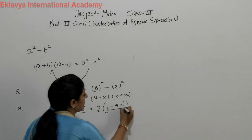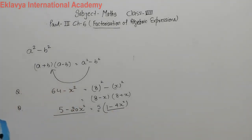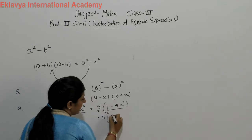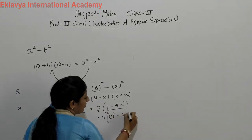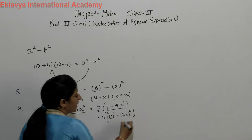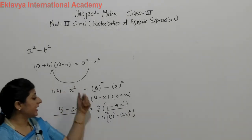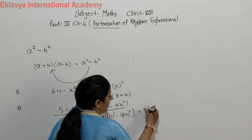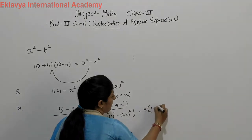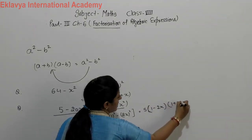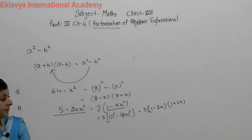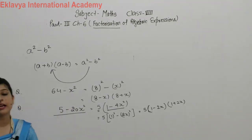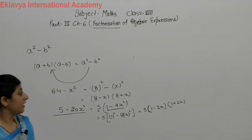Now we check whether inside the bracket we can apply any identity. We see that 1 is the whole square of 1, and 4x² is the whole square of 2x. So it again becomes the identity A² - B². We write 5 × (1 - 2x)(1 + 2x). These three factors are the complete factorization of 5 - 20x².